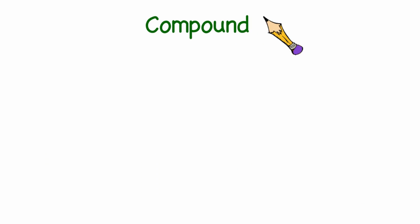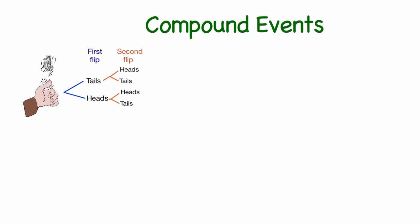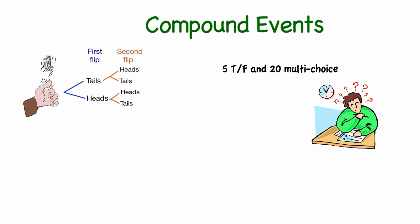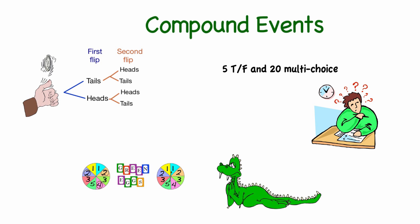So a compound event can be as simple as finding the probability of flipping a coin 2 times and both times having it show up heads. Or it can be complex to include many different events. The key thing to remember is that a compound event is when 2 or more independent events happen together. And to find the probability of a compound event, one finds the probability of each event and then multiplies them together.